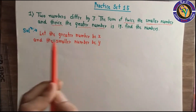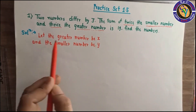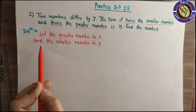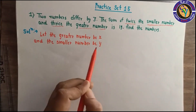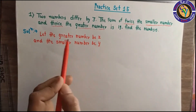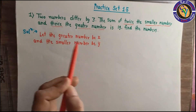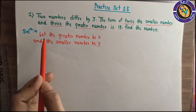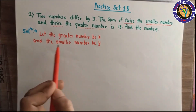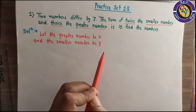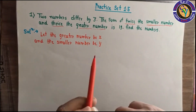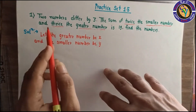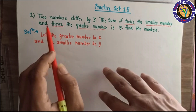Let the greater number be x and the smaller number be y. Now we will look at the first condition. From the first condition, we write an equation.